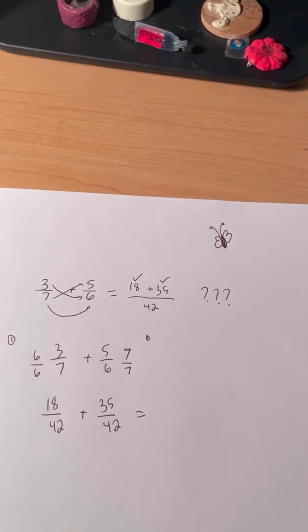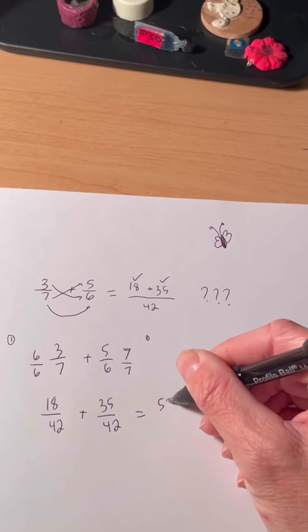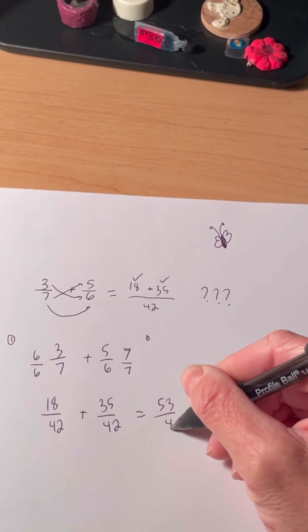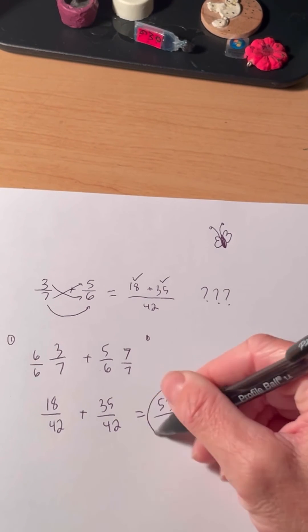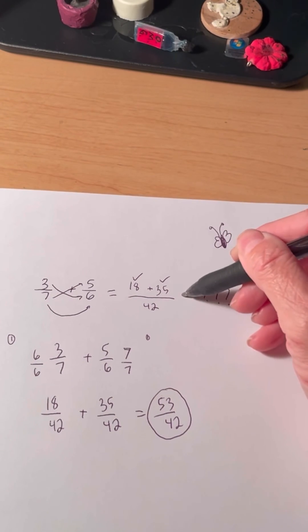And with a little math, we get 53 over 42, which is what we would have had using the butterfly method.